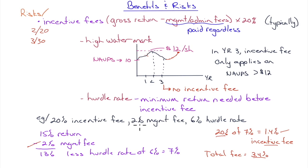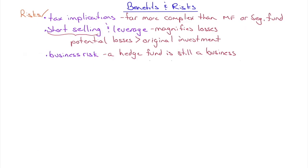If there's also a high watermark, the first check is whether you're above the highest value the fund has ever been. If not above that high watermark, the incentive fee is gone entirely — though the management fee still applies. This combination of high watermark, hurdle rate, and incentive fee structure is important to understand fully.